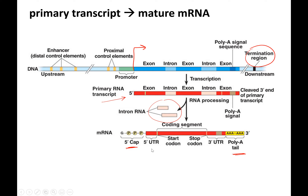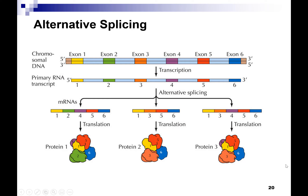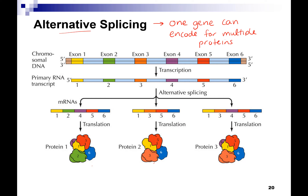If you're thinking it seems like a waste to get rid of all those introns, they're not always gone — and this is an important concept. Alternative splicing means sometimes we keep different combinations of exons together. The spliceosome can splice different exons together — they always have to stay in order — but you can make multiple proteins from one gene. So one gene can encode for multiple proteins. We use different combinations of exons, which gives us different mRNAs that will eventually give us different proteins.